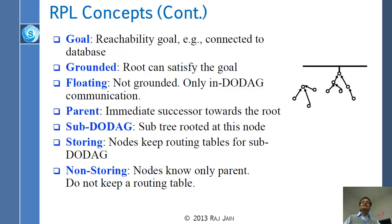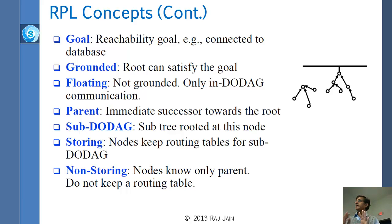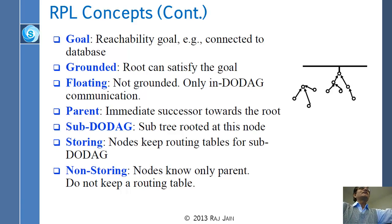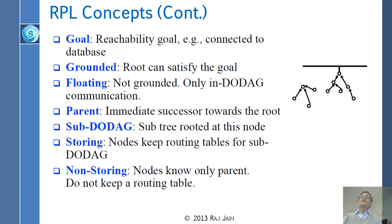There are two kinds of nodes: some keep the whole routing table and know how to get from A to B; others are very simple and don't keep any routing table — all they know is who their parent is. These are like small children who only know their parents. Whenever given a packet, they give it to their parent, who gives it to their parent, and so on. The whole DODAG must be either storing or non-storing — the root is always storing; the rest follow the DODAG's mode.